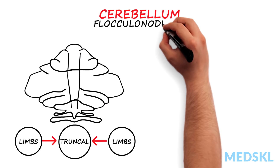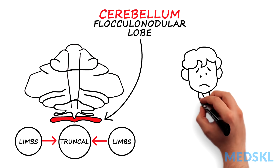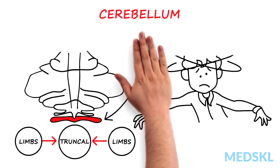The last part of the cerebellum is the flocculonodular lobe, also known as the vestibulocerebellum. Problems in this region result in postural instability and impaired eye movement control.